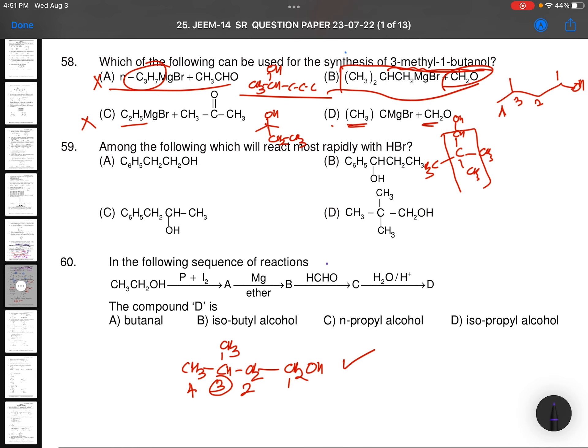Among the following, which will react most readily with HBr? As we know, tertiary alcohols react most readily. This is primary alcohol. This is secondary alcohol with a phenyl group.